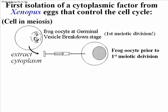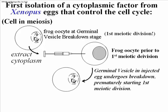If the cytoplasm of an egg at the germinal vesicle breakdown stage is collected in a syringe — which is possible because of the large size of the egg — and then injected into an egg at an earlier stage, that is before germinal vesicle breakdown, the nucleus in the injected egg immediately undergoes germinal vesicle breakdown, prematurely starting its meiosis I. The conclusion is that the oocyte in the germinal vesicle breakdown stage must contain a diffusible chemical factor that is able to induce meiosis in an earlier oocyte.